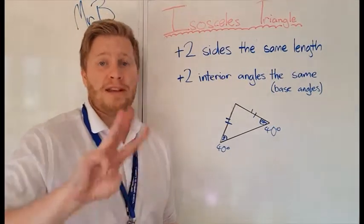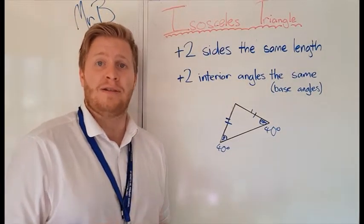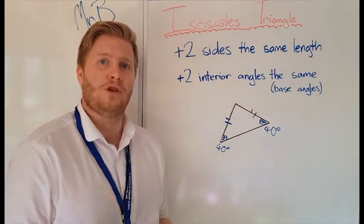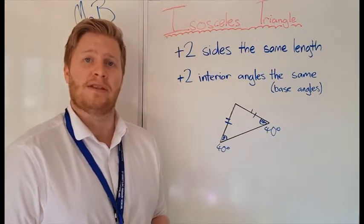So, equilateral, all three sides are the same and three interior angles are the same. Isosceles triangle, we have two sides the same length and we have two interior angles that are the same as well.